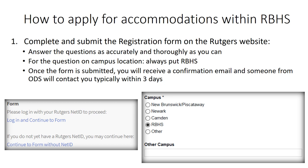Now that we have talked about what a disability is, different types of disabilities, self-advocacy, and confidentiality, it is time to discuss applying for accommodations within RBHS. If you know you have a disability or suspect you may have one and feel that you need accommodations, you should request accommodations or services as soon as possible. Accommodations are not retroactive. The first step is to complete and submit the registration form on the Rutgers website, answering all questions as accurately and thoroughly as possible. Once the form is submitted, you will receive a confirmation email and someone from ODS will contact you typically within three days.